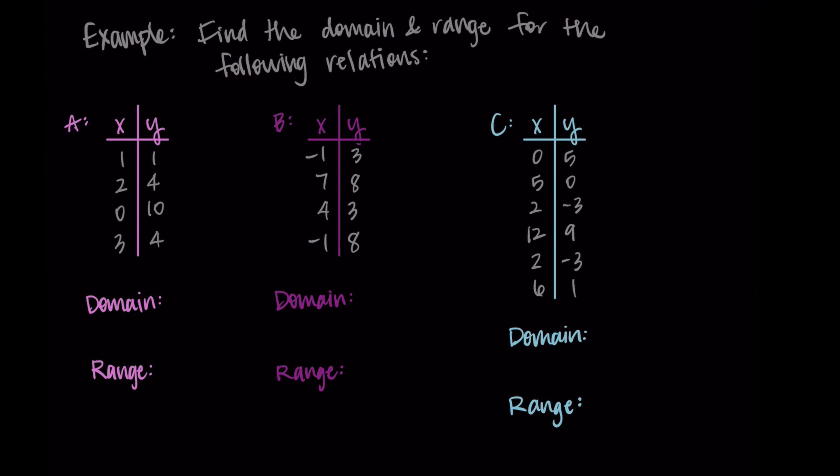All right, so I'm going to find the domains of these relations first and then we'll do the ranges. So for the domain, we look at the possible inputs. And in this case, these are the X values. So starting with relation A, I'm seeing that my inputs are 1, 2, 0, and 3. And so I could just list these in a set and that would be it.